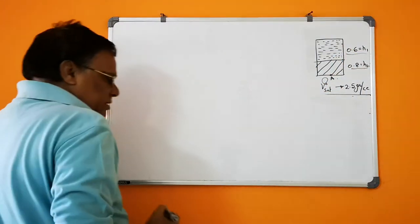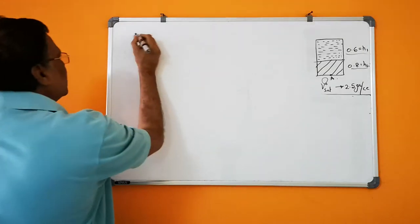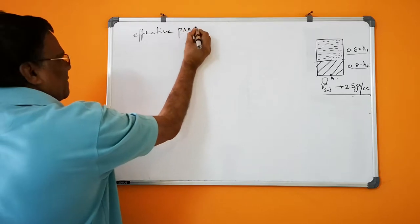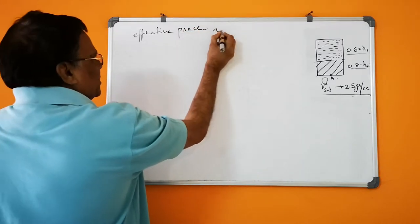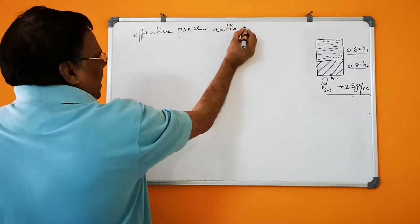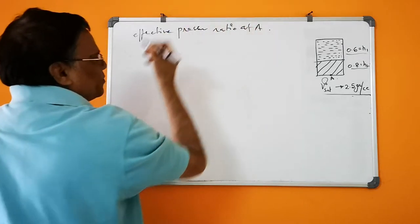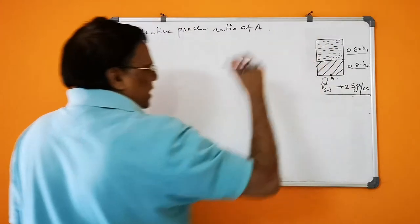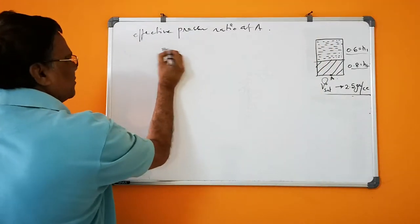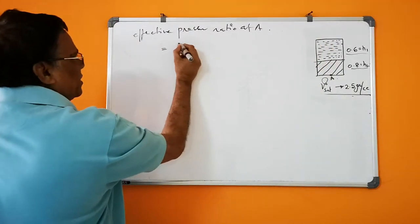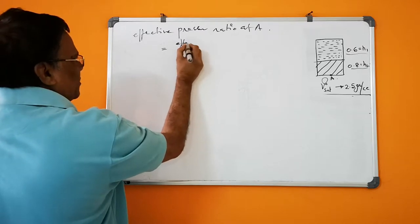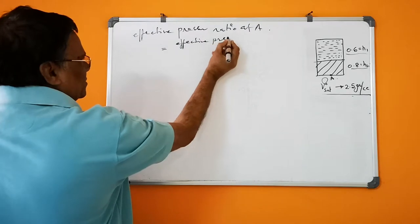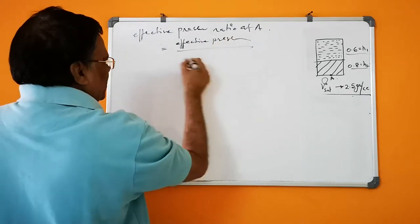It is asked effective pressure ratio at A. The effective pressure ratio is given by effective pressure divided by total pressure.